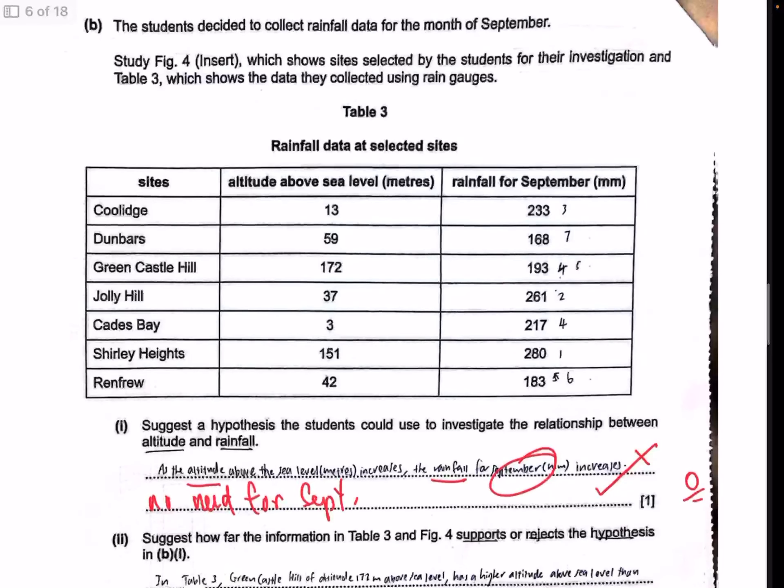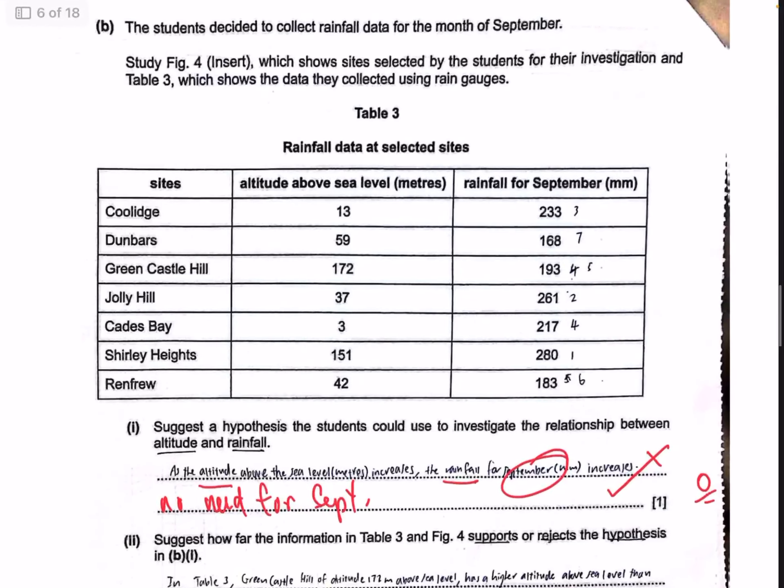Part B deals with students collecting data for the month of September — they've decided to do primary data collection. Figure 4 in the insert shows the locations used for the investigation, together with Table 3, which shows data collected using a rain gauge. They want a hypothesis to investigate the relationship between altitude and rainfall. Whether it's a positive or negative relationship is up to you, but it just needs to be a relationship you can test with the data already obtained from Table 3.